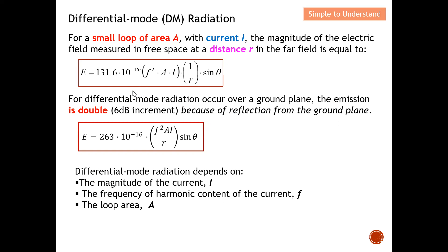For differential mode radiation occurring over a ground plane, the emission is doubled — a 6 dB increment — because of reflection from the ground plane. So when you have this situation, the emission is doubled due to ground plane reflection, and in the equation you multiply by two. From this, you can see that differential mode radiation depends on three things: the current I, the loop area A, and the frequency.